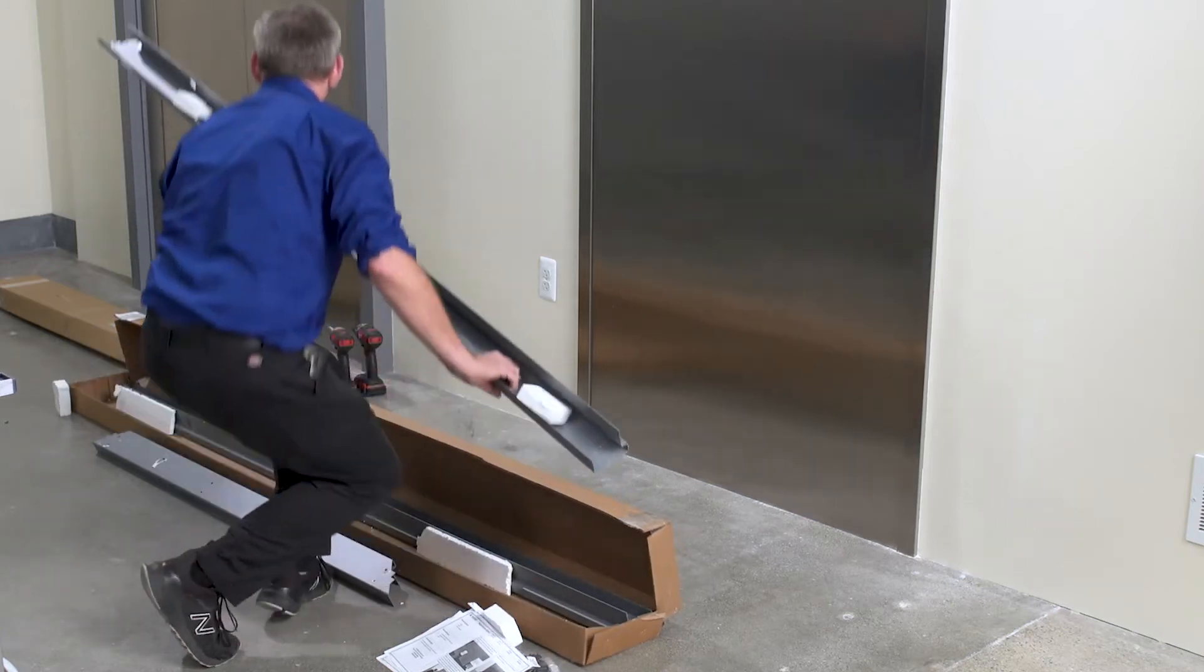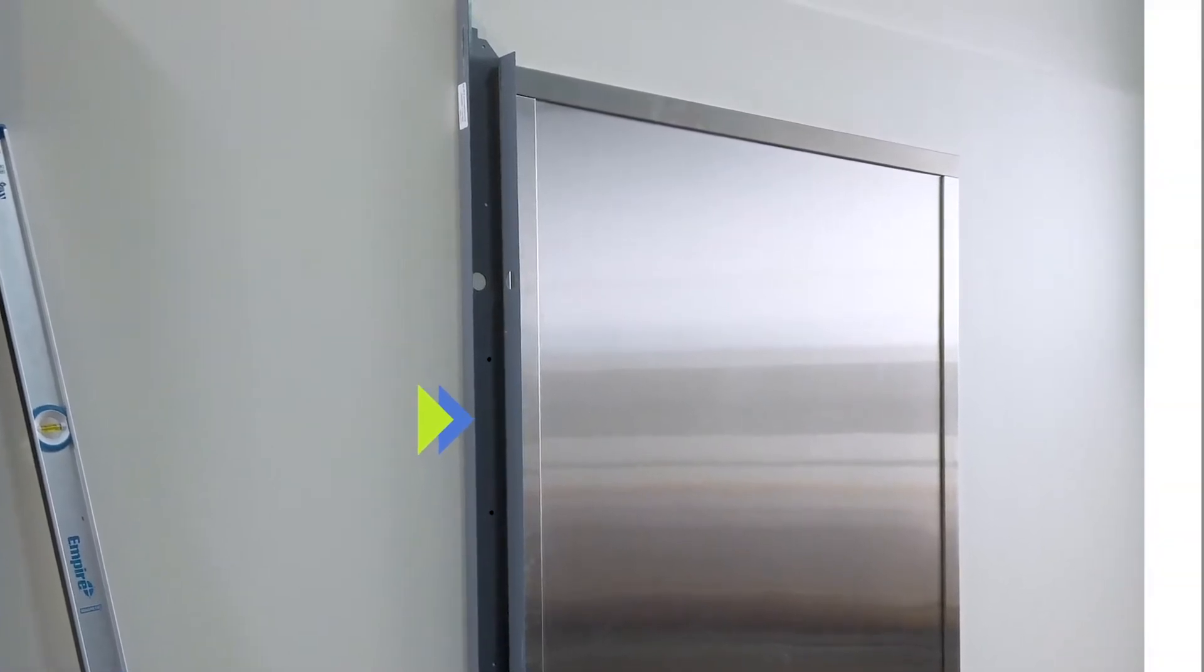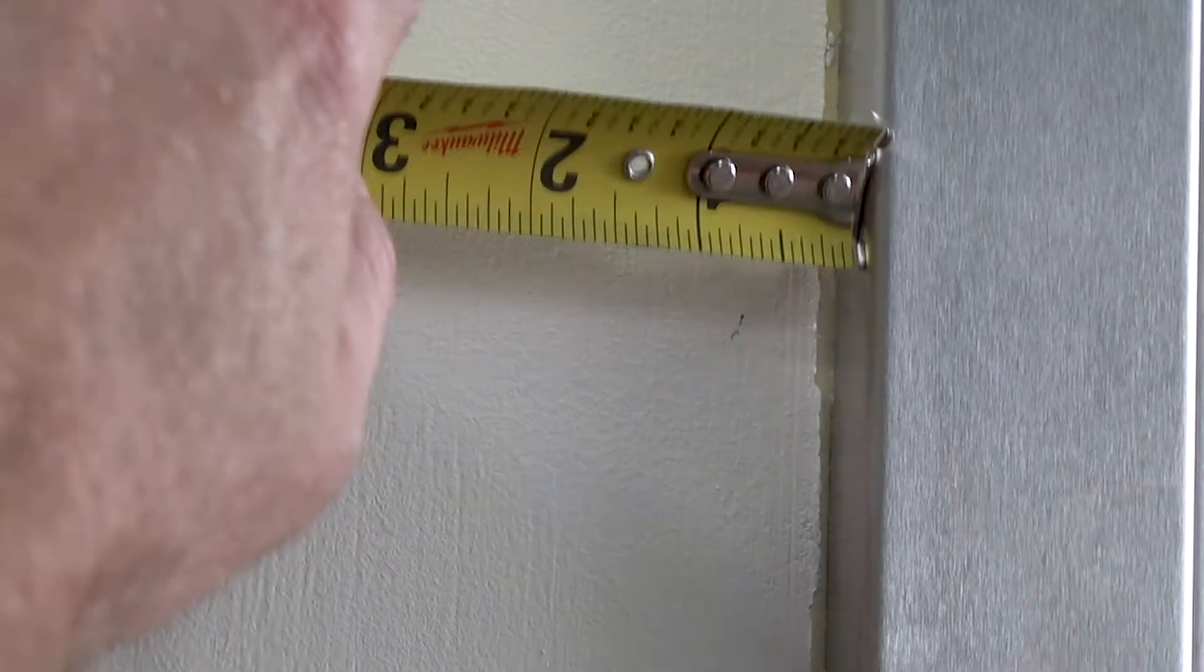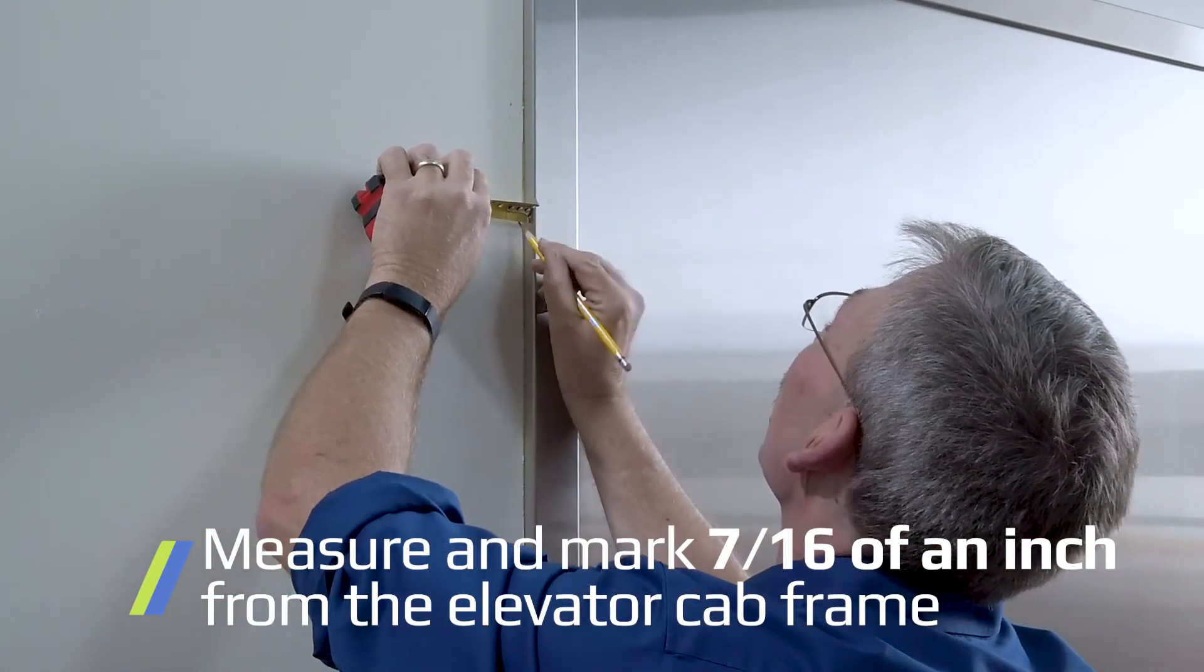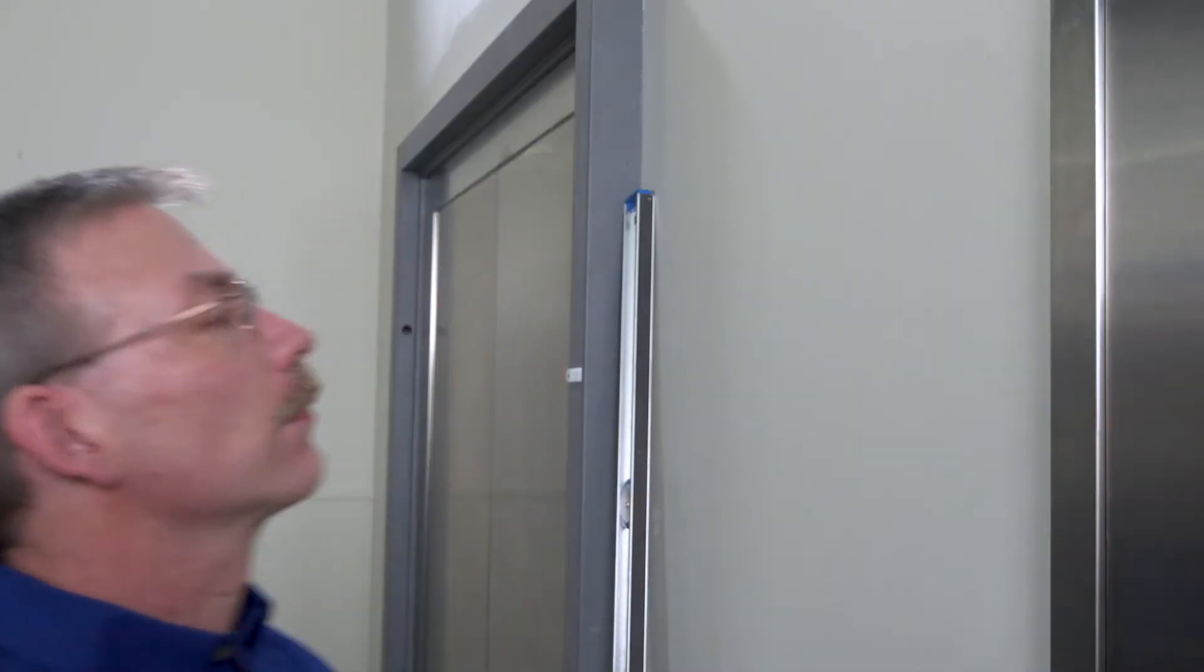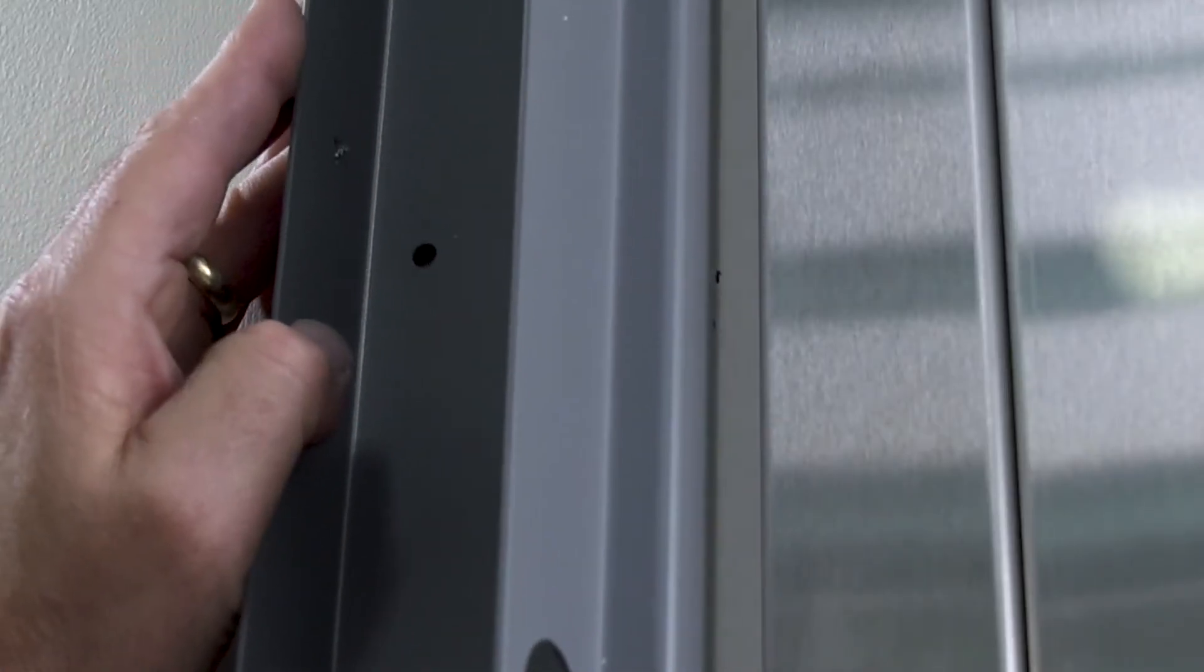In this video, we will be working clockwise, beginning with the sub buck leg to the left of the door. Measure and mark seven sixteenths of an inch from the elevator cab frame. This will help to correctly align the frame on the wall. Once the measurement is marked, take the first sub buck part and align it with the mark on the wall.